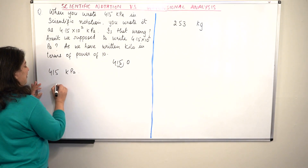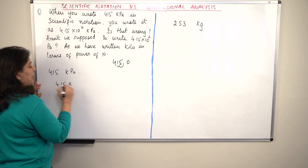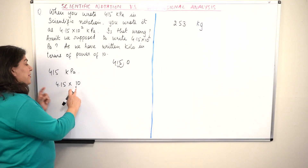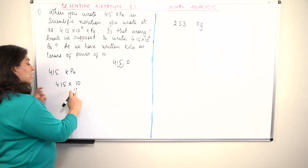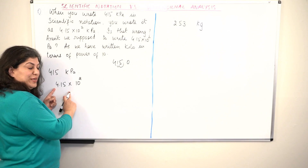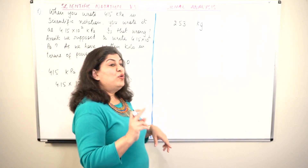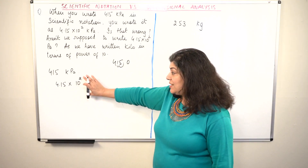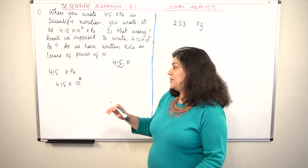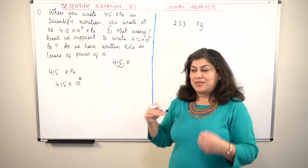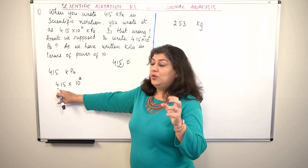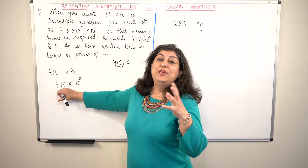In order to do that, I get 4.15. What should I multiply 4.15 by in order to get 415? I should multiply it by 100, and 100 is 10 to the power 2. If I multiply 4.15 by 100 I will get 415. So this is scientific notation — we write only one digit before the decimal, the rest comes after, and then we add a multiple of 10 so that the value of the number does not change.